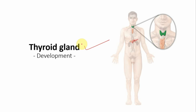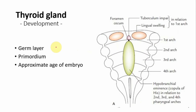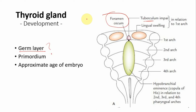Now the development of the thyroid gland. The diagram shows the floor of the primitive pharynx with the pharyngeal arches, lingual swellings, tuberculum impar, and hypobranchial eminence. Between the tuberculum impar and the hypobranchial eminence is the foramen cecum. From this region, an endodermal diverticulum extends downwards and leads to the formation of the thyroid gland. So the germ layer is endoderm.